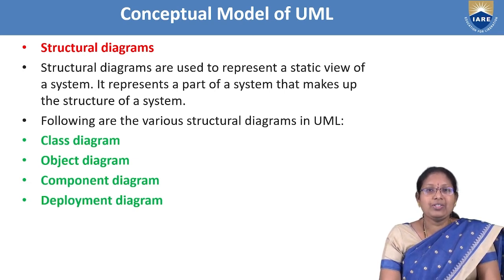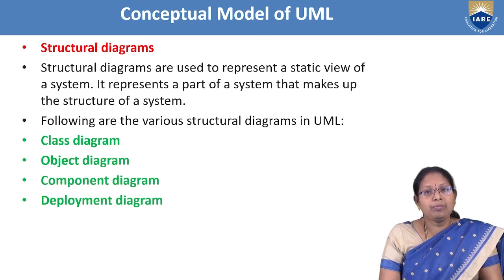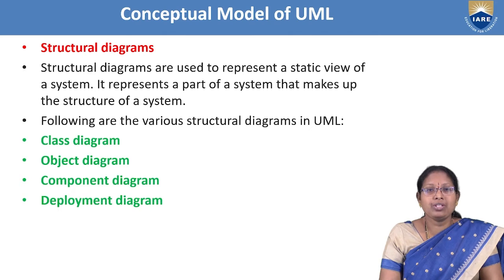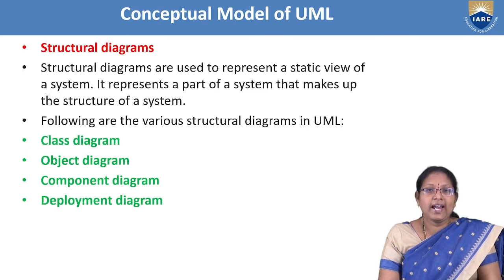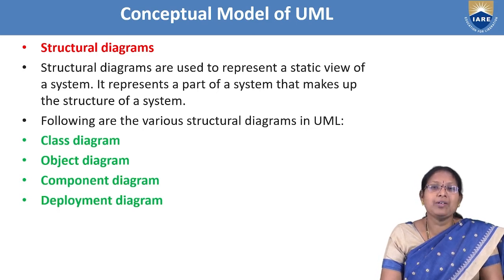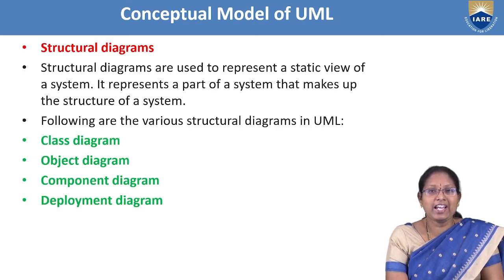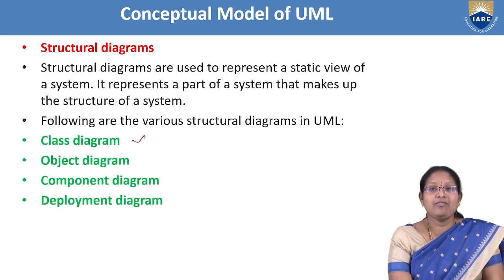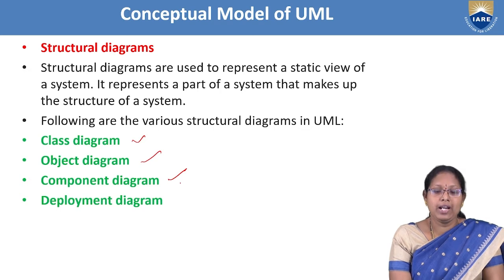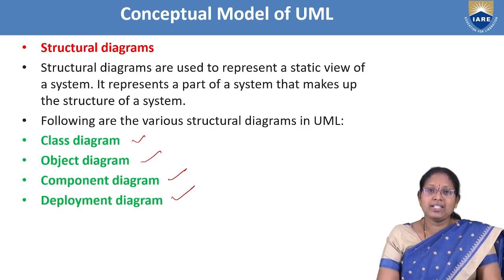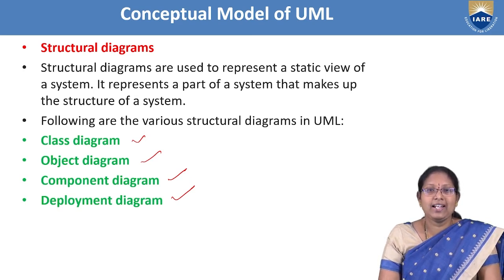The class diagram contains classes, interfaces, collaborations, and their relationships. It describes the static aspects of the system and is a structural diagram. The object diagram is similar to the class diagram but contains objects and their relationships. The component diagram contains components and their relationships, showing the static implementation view.